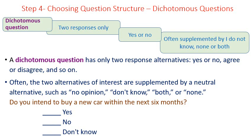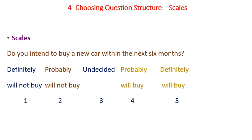Example of a dichotomous question: 'Do you intend to buy a new car within the next six months?' — yes, no, or I do not know. For a scale question on the same topic, a scale from 1 to 5 is used: definitely will not buy is 1, probably will not buy is 2, undecided is 3, probably will buy is 4, and definitely will buy is 5.